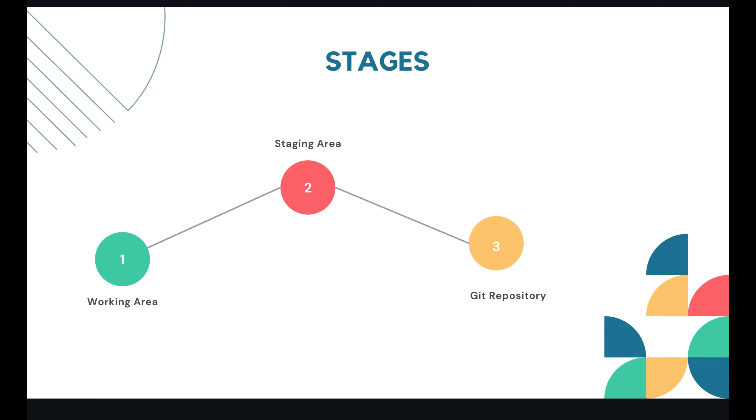Once you run 'git add,' files move to the staging area. Once you run 'git commit' and push, they are moved to the git repository. I will explain everything in detail using CLI in future sessions.